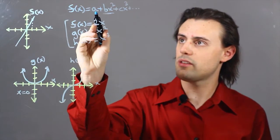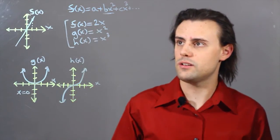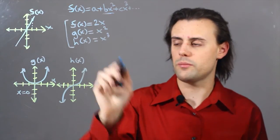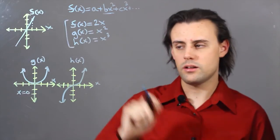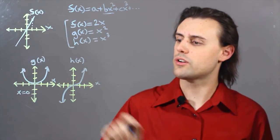As I increase the value of the coefficient in front of the monomial term then I'm going to essentially be stretching the graph along the vertical direction.